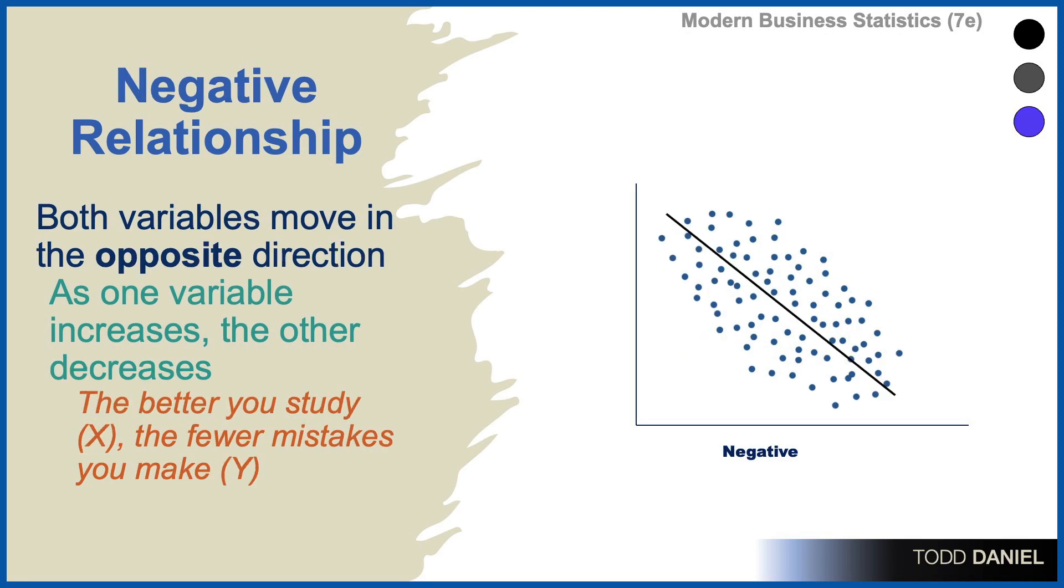This is a negative relationship. Both variables move in opposite directions. As one variable increases, the other decreases.